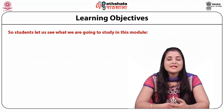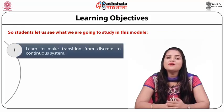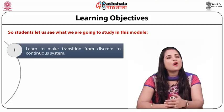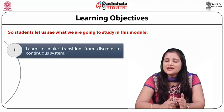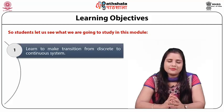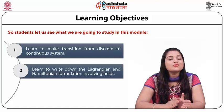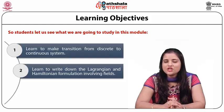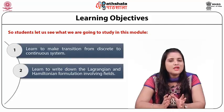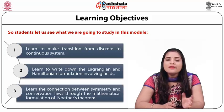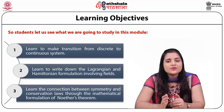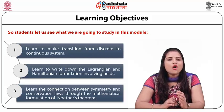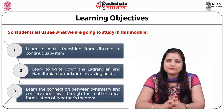Let us see what we are going to learn in this module. We will learn to make the transition from discrete to continuous system, to write down the Lagrangian and Hamiltonian formulation involving fields, and to learn the connection between symmetry and conservation laws through the mathematical formulation of Noether's theorem.